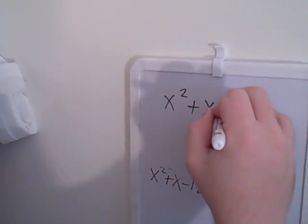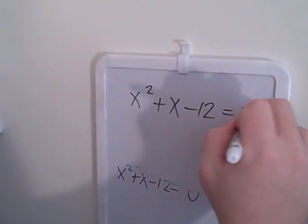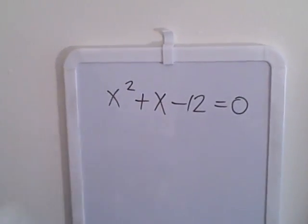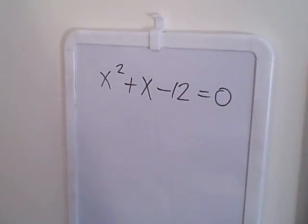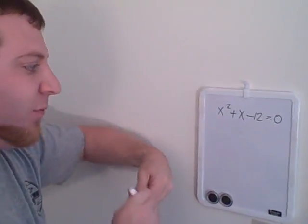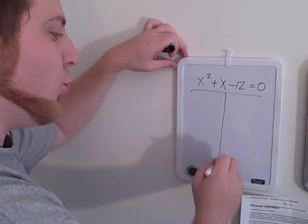Now this equation that we have, x squared plus x minus 12 equals 0, is the exact equation that we started with. I just moved things around a little bit using mathematical rules. From here you can go one of two ways.